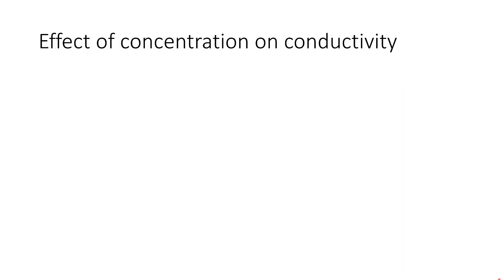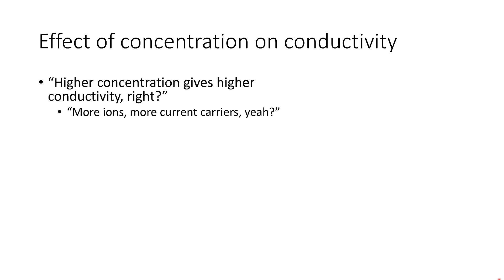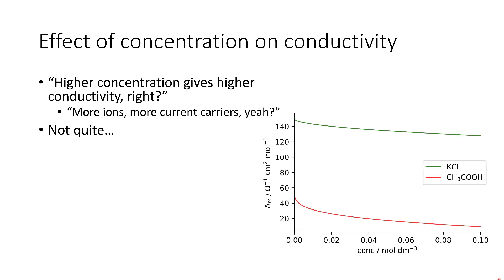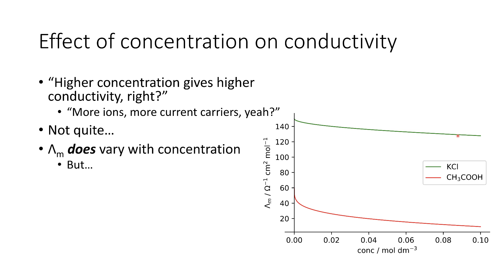When we think of conductivity, we want to look at the effect of concentration. Concentration greatly affects the conductivity of a solution. The common way of thinking about it is that higher concentration gives higher conductivity, because we have more ions in solution and so more current carriers. However, when we measure our conductivity, we find that as concentration increases, we actually get a decrease in the molar conductivity — the opposite of what we would predict.